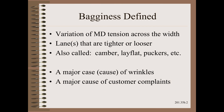Bagginess is defined as the variation of MD tension across the width. By now you should already be thinking of profile, specifically MD tension profile. More pragmatically, bagginess is lanes of relative tightness or looseness going by a number of names such as camber, lay flat, pucker, and so on.